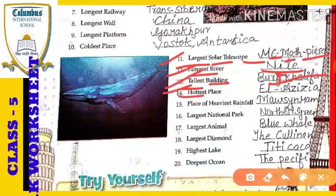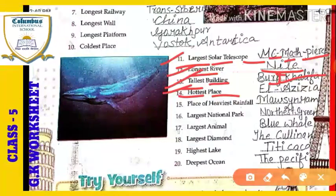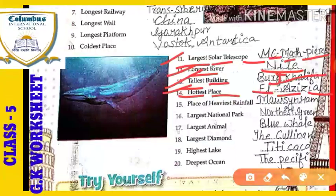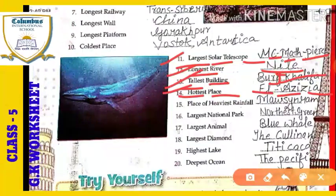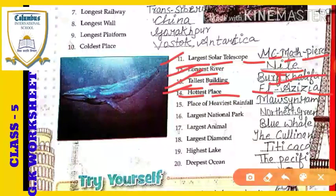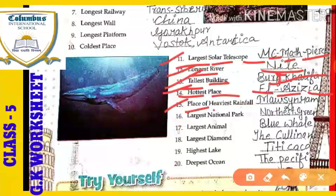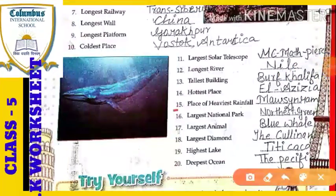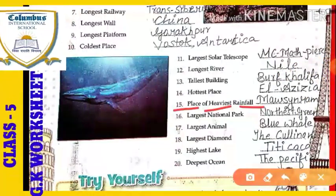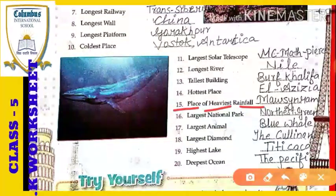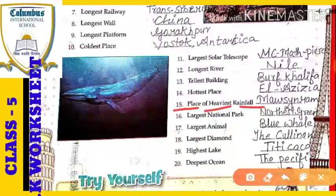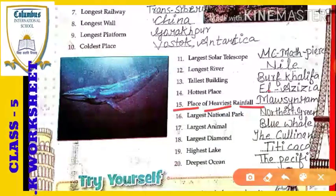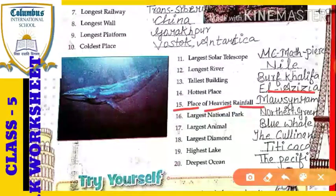Next: the hottest place. Which place is the hottest place of the world? That place is called Al-Azizia — spelled A-L-A-Z-I-Z-I-A. Al-Azizia is the hottest place of the world and it is located in Libya. Next: the place of heaviest rainfall — that is Mawsynram.